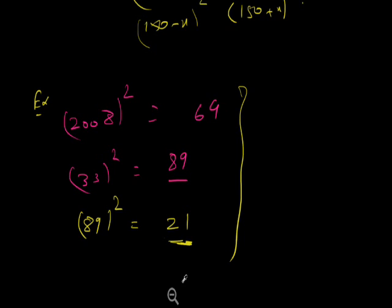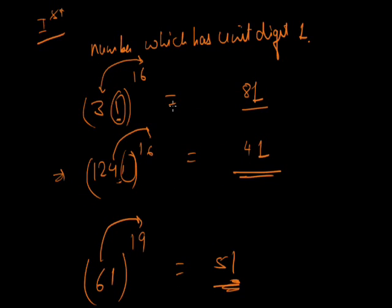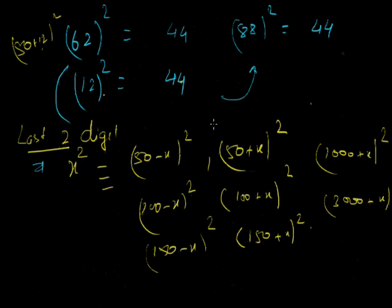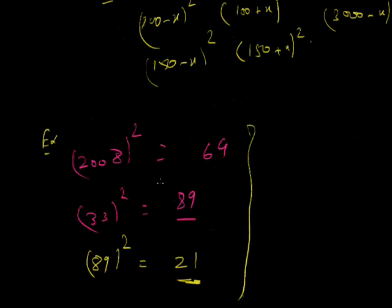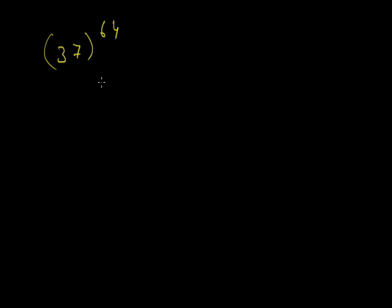Now, using both concepts together: for numbers ending in 3, 7, or 9, we use cyclicity. The key facts are: 3 raised to power 4 ends in 1 (since 3⁴ = 81), so 3^(4n) ends in 1. Similarly, 7^(4k) ends in 1, and 9^(2n) ends in 1. So whenever we have a problem involving digits 7, 1, 3, or 9, we try to convert it to a unit digit of 1, then apply concept one.